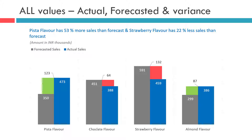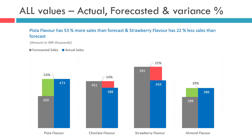Instead of showing the actual amount difference, we can also show this in percentage terms. You can clearly see that instead of the actual difference amount, for Pista Flavors the Actual Sales have exceeded Forecasted Sales by 53%, and a similar presentation is being done for other flavors as well. So let us quickly have a look inside Excel at how we can create this chart.